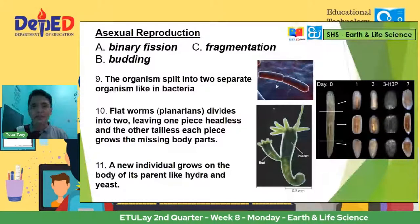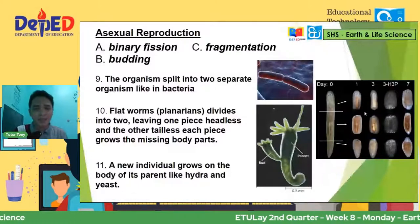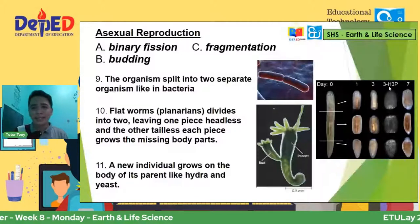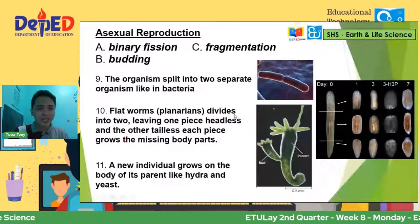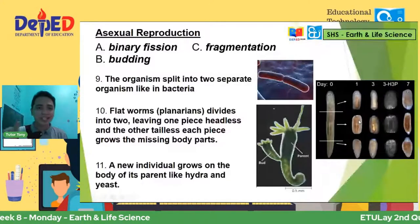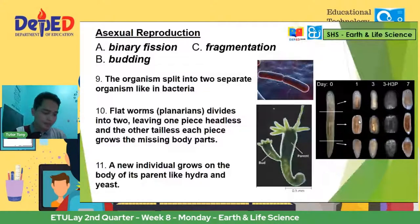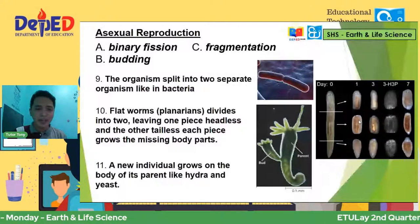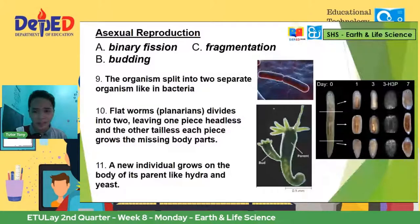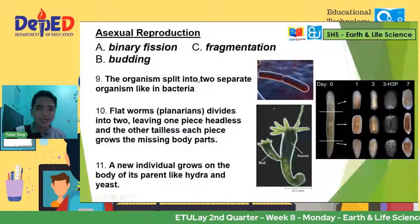Number ten: flat worms — they divide into two, leaving one piece headless and the other tailless, and each piece will grow into another organism. That is called fragmentation. Correct, Sophia. Number eleven: a new individual grows on the body of its parent, like the hydra. The hydra is a very small microscopic organism found in fresh waters. As you can see, may maliit na usbong na tumubo sa kanyang katawan — the process is called budding. So binary fission, fragmentation, and then budding.